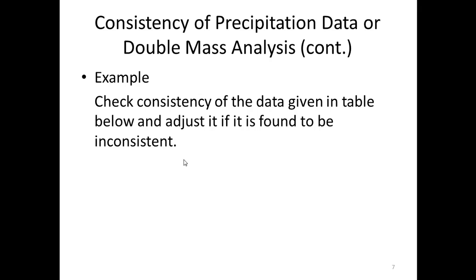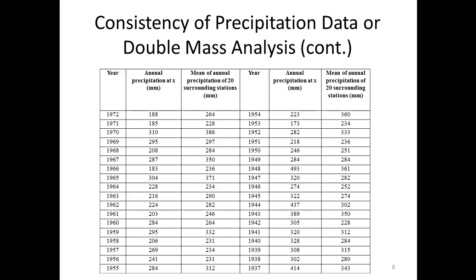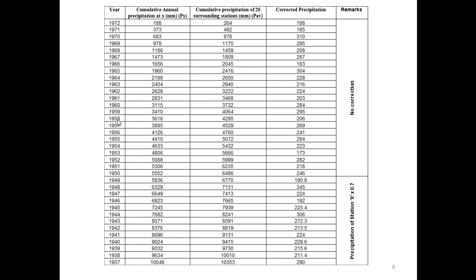We will now solve an example on double mass analysis. The problem statement is: check the consistency of the data given in the table below and adjust if it is found to be inconsistent. The data gives, for different years, the annual precipitation at station X and the mean annual precipitation of 20 surrounding stations in mm. We need to check whether this data is consistent or inconsistent, and for this purpose we will first plot the double mass curve.